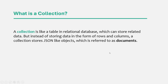In the introduction lecture, we learned that a collection is like a table which can store related data. But instead of storing data in the form of rows and columns like in a relational database, a collection stores JSON-like objects which are referred to as documents. So in simple terms, a collection is basically a collection of documents.